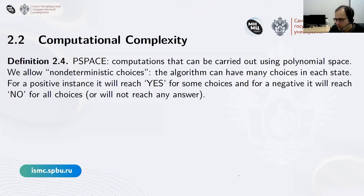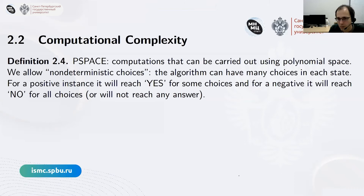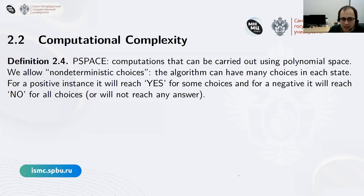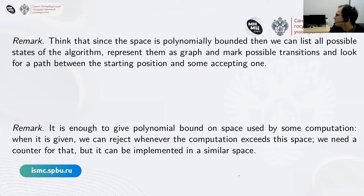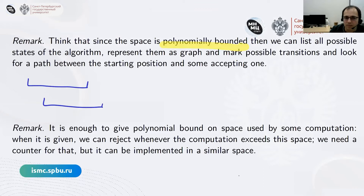Moreover, we allow non-deterministic choices — the algorithm can from time to time choose one of several options. If the instance is positive (the word equation is satisfiable), then for some of those choices we will get a yes answer. If the instance is negative, then for whatever choices are made, it will always lead to a negative answer or loop forever. Since the space is polynomially bounded, we can list all possible configurations of the algorithm.